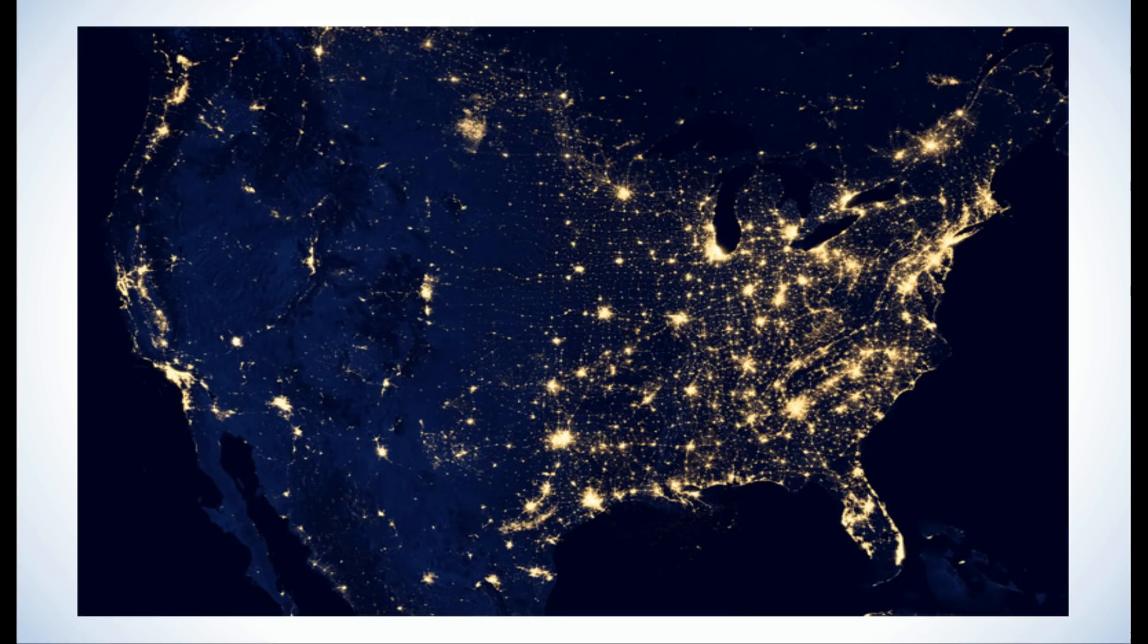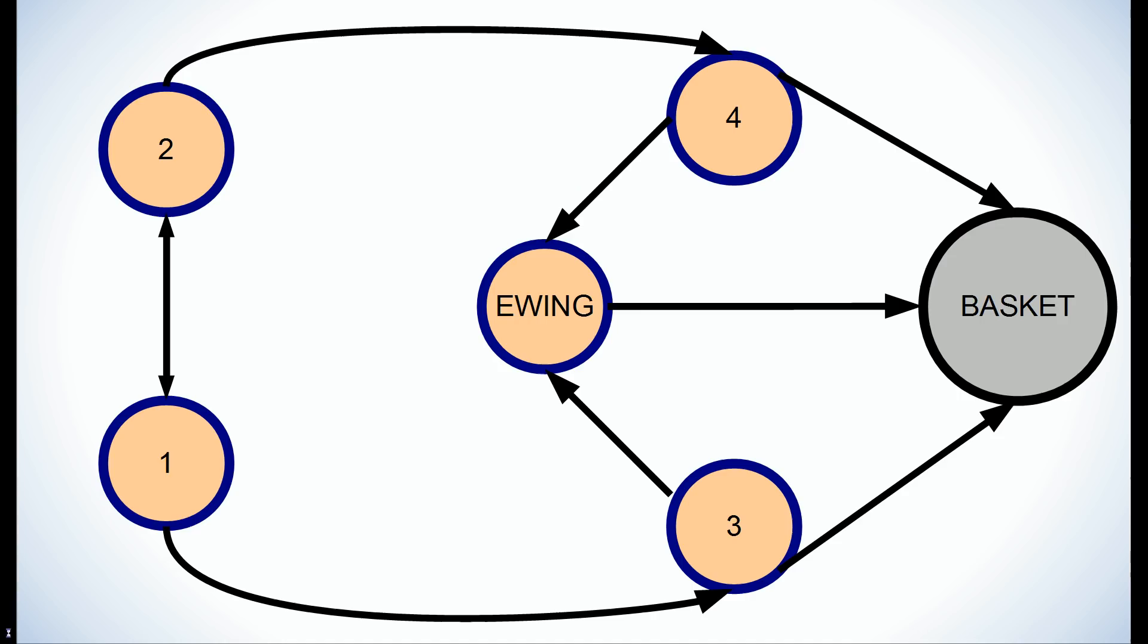The Braess Paradox has also been used in basketball to explain the Ewing Paradox, that the New York Knicks could have been a better scoring team when they benched their best player.